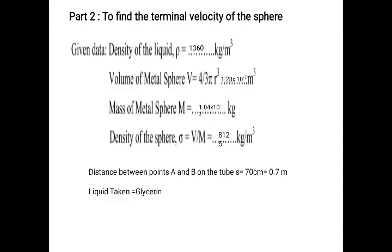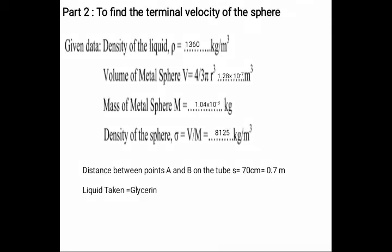Part 2 of this experiment is to find the terminal velocity of the sphere. The given data: density of the liquid = 1360 kg/m³, volume of the metal sphere = 1.28 × 10⁻⁷ m³, mass of metal sphere = 1.04 × 10⁻³ kg.